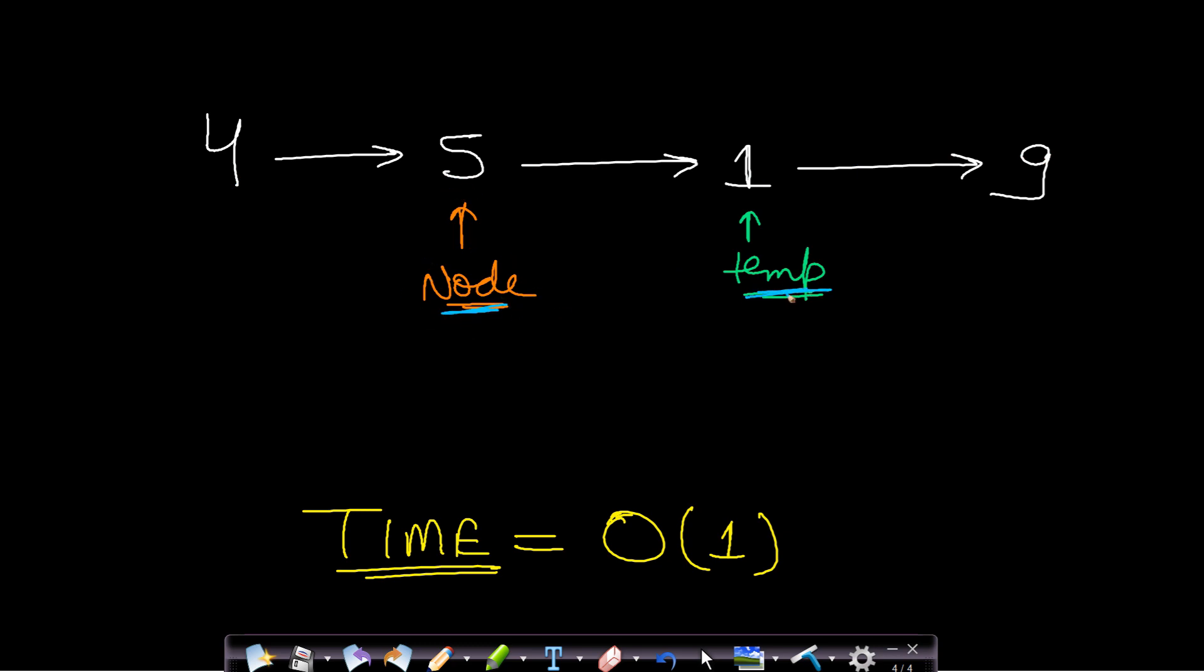We will store the next node of this current node in our temporary variable. Now since this is stored in temp, we will just copy the next node value to the current node, so this will now be equals to 1.